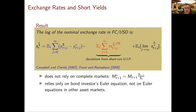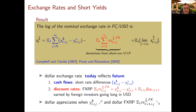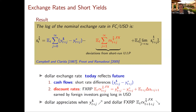There are really two main forces to think about. The dollar exchange rate today is going to reflect a cash flow term and a discount rate term. The cash flow term — in blue — is the difference between short-term interest rates in all future periods: the dollar interest rate minus the foreign interest rate. The discount rate component — that's the currency risk premium in red — is the deviation from short-run UIP. If you were to impose uncovered interest rate parity, the red terms would disappear and you'd only be left with interest rate differences and the tail.